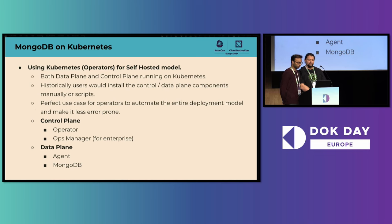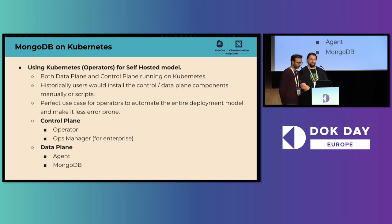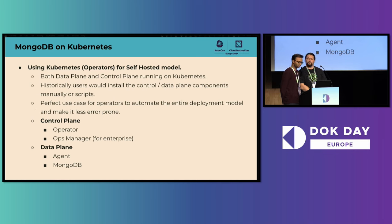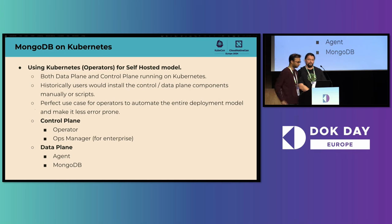To zoom in further into self-hosted, Kubernetes serves as the backbone for both the control and the data plane. Prior to our Kubernetes operators, users would manually install the control plane first, wire them up, and then configure and deploy the data plane. As you can imagine, this would be a series of manual, potentially error-prone steps to manage a database at scale. This was an ideal use case to automate the deployment and management of the database using Kubernetes operators. For those not familiar with operators, it's basically an active reconciliation loop running in your cluster that takes some desired state of the world and converges the current state towards the desired state. We divide the deployment into two parts — the first is the control plane, comprising the MongoDB Kubernetes operator and a software component called Ops Manager. This is only needed for enterprise deployments.